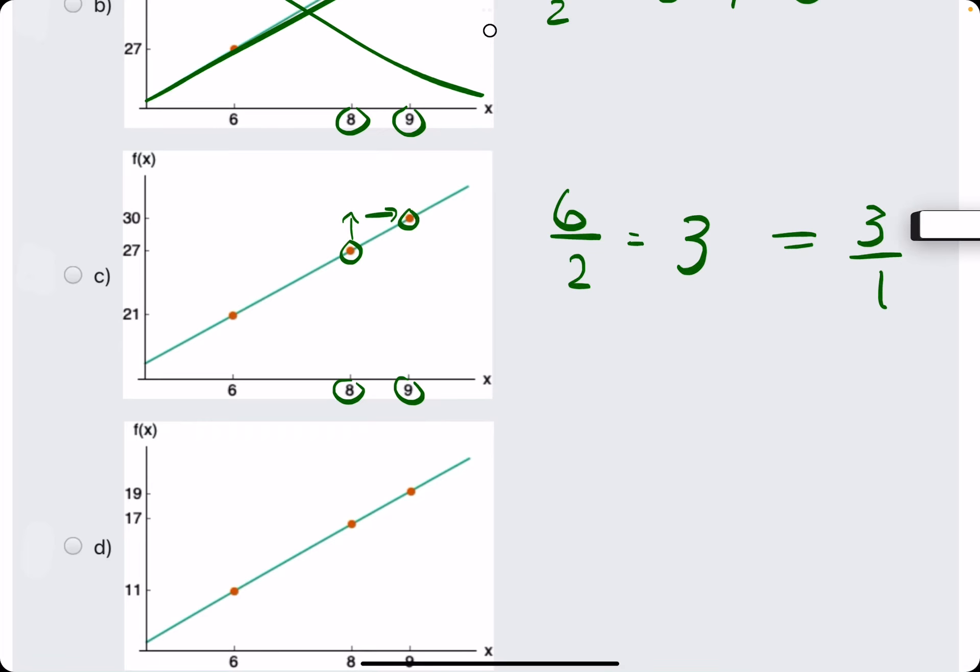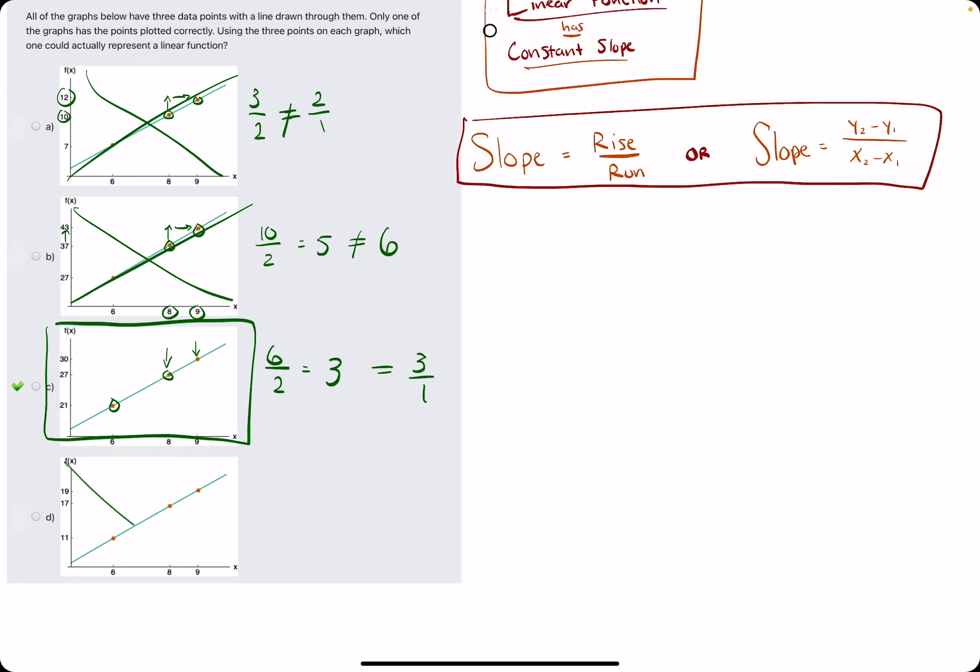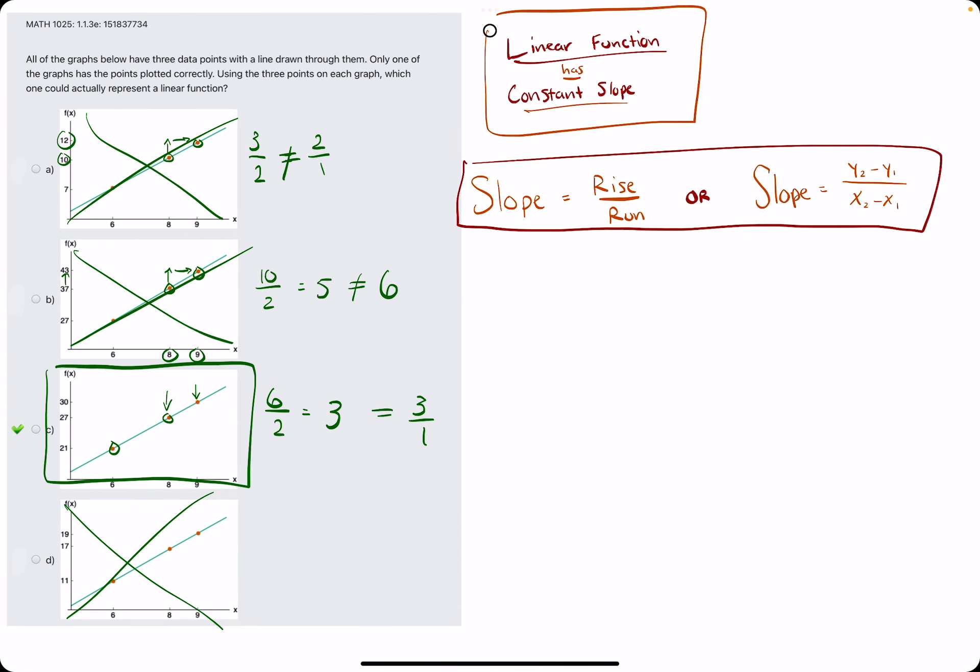So because the slope between the first two points is equal to the slope between these two points, this has a consistent slope and is therefore our linear function. And I won't even check this one because I think you get the point by now.